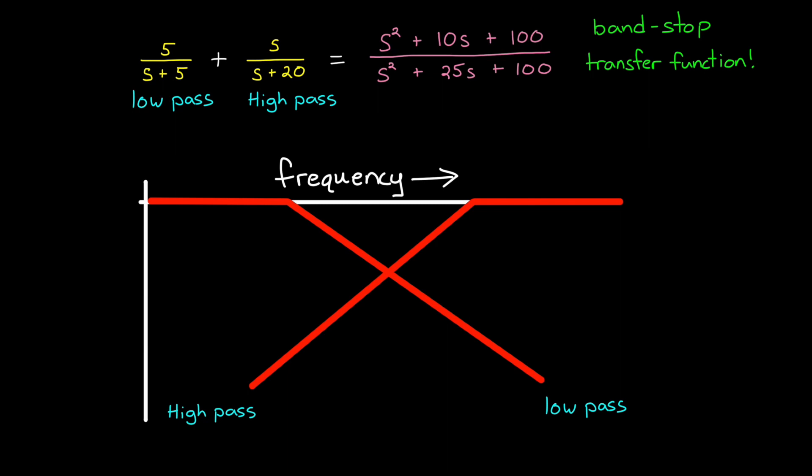This bandstop filter that we created will produce a frequency magnitude response that looks like this V shape. So thinking of a bandstop filter as the combination of both a high-pass and low-pass filter seems to work. Easy enough, right?